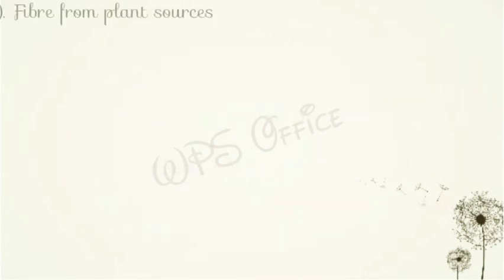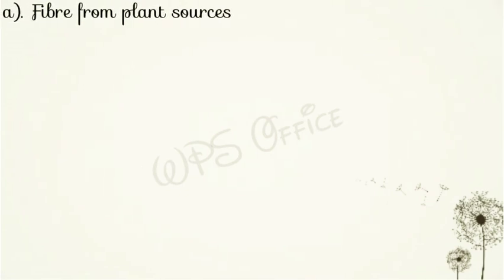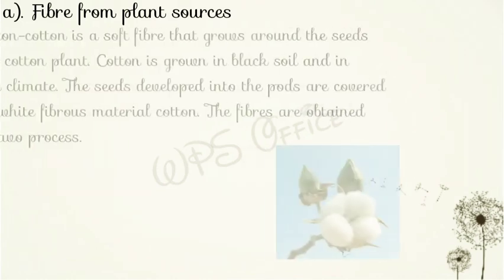First, we deal with fiber from plant sources — पौधों के स्रोत से प्राप्त होने वाले रेशे। The main two are cotton and jute. इसके अलावा linen, flax, hemp आदि भी होते हैं, लेकिन यहाँ हम सिर्फ cotton और jute के बारे में पढ़ेंगे।